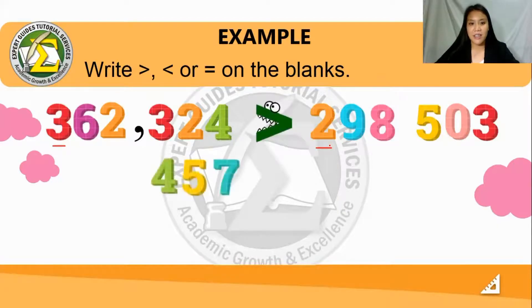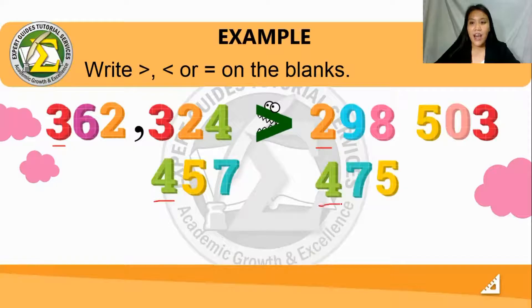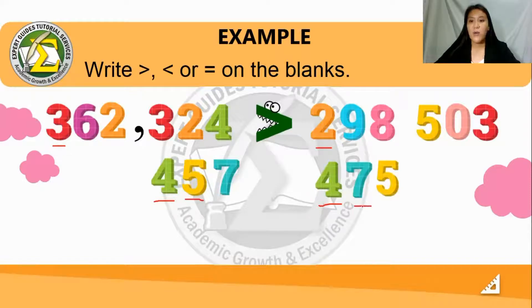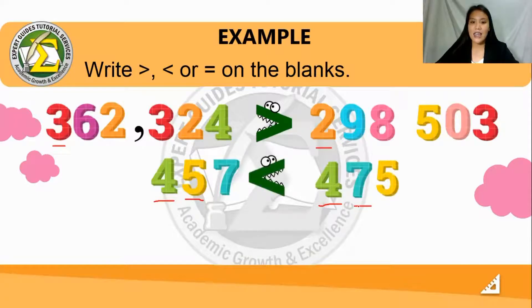Let's have another example. Both numbers have the same highest value in the hundreds place. So let's compare the next digit. Since both hundreds digits are four, we move to the tenths place — we have five versus seven. Which one would our hungry alligator eat? Of course, seven. So our answer is less than.